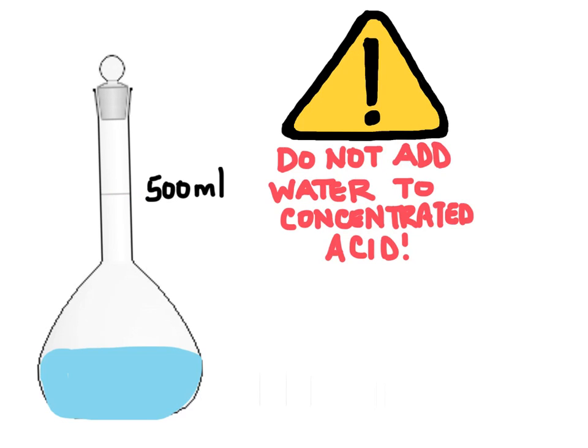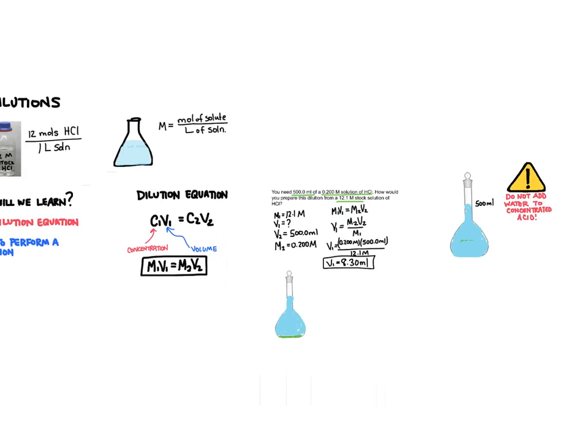Once we add that little bit of water, maybe 200 mils or so, then you can add in that 8.3 mils of acid. Then continue to dilute up to the mark to get to 500 mils. You don't want that splashing up into your face. And that's how you perform a dilution.